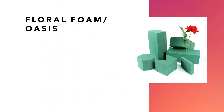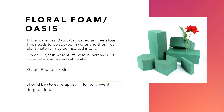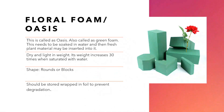The first and basic form we are going to see is a floral form. As you can see in the adjoining image, this form is typically green in color and is also called as oasis. It's also called as green form and it needs to be soaked in water, then fresh plant material can be inserted into it. Dry and light in weight initially, once immersed in water its weight increases almost 30 times when saturated. Various shapes of floral form are available in the market — typically round, oval and rectangular shapes.